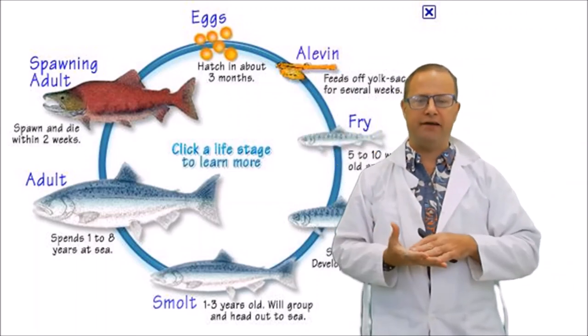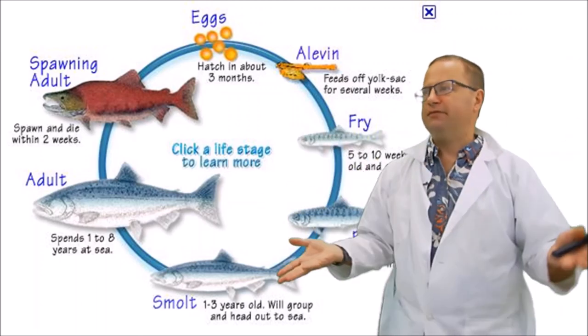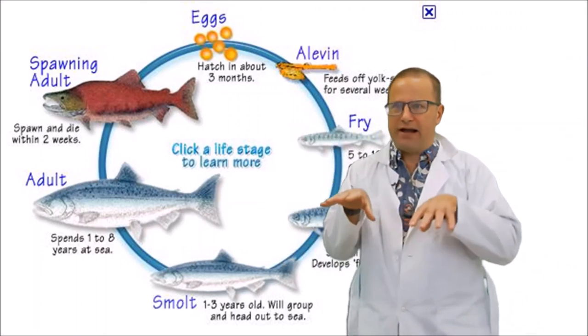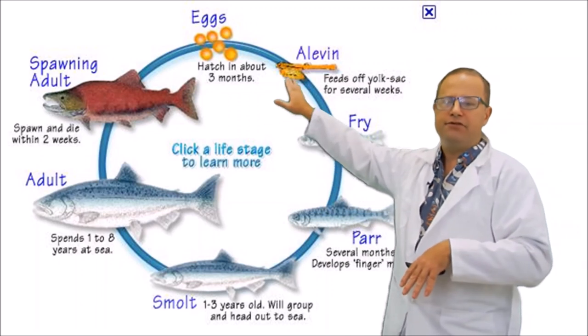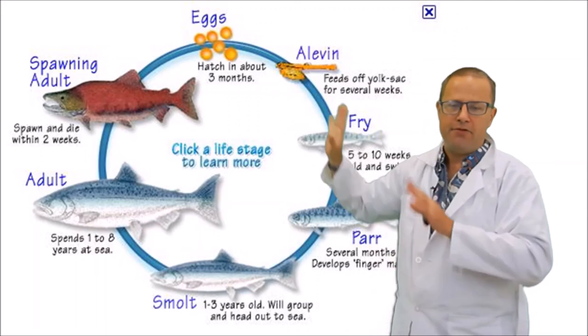An alevin is otherwise known as a yolk sac larva. These guys don't have fins that are moving around really. They would kind of drift around if they weren't remaining down in the gravel, so they're hunkered down in the gravel. They're subsisting off of just this yolk in the yolk sac there, so that's where they're getting their nutrition from. They're not eating anything.